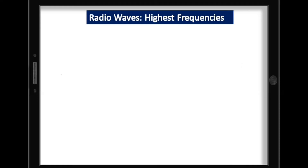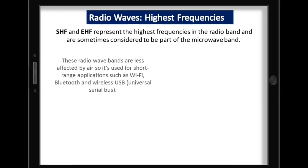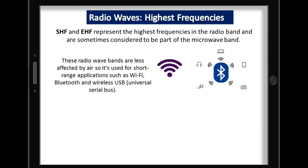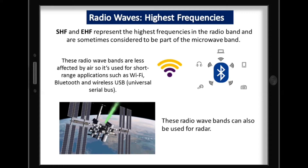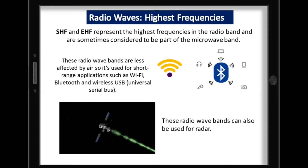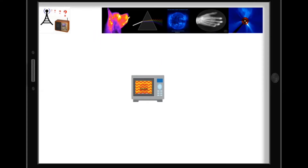Super high frequency and extremely high frequency represent the highest frequencies in the radio wave band and are sometimes considered part of the microwave band. These bands are used for short-range applications such as Wi-Fi, Bluetooth, and wireless USB, and can also be used for radar. Since you now know the different uses of radio waves, the next type of EM wave is microwaves.